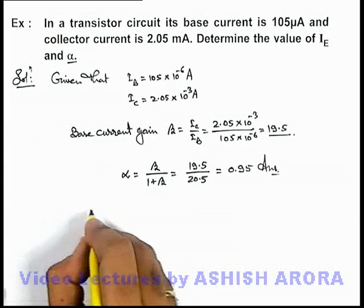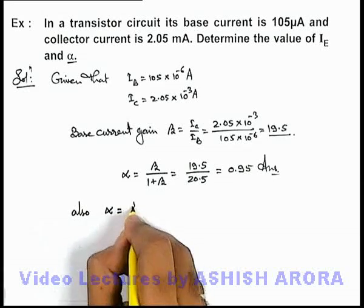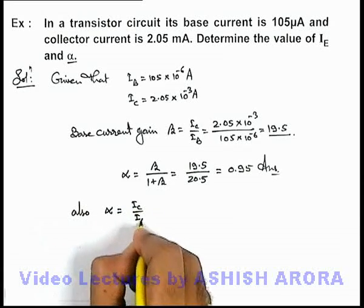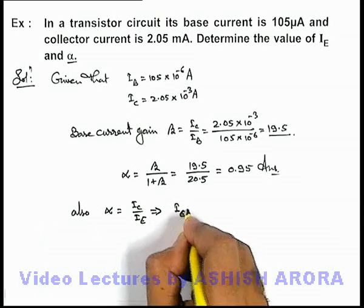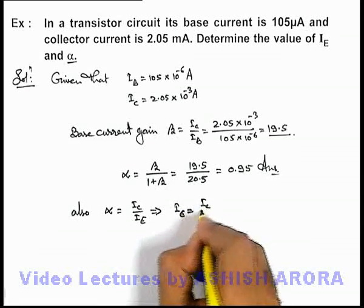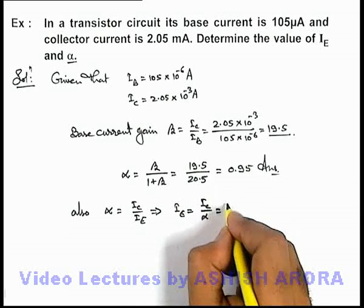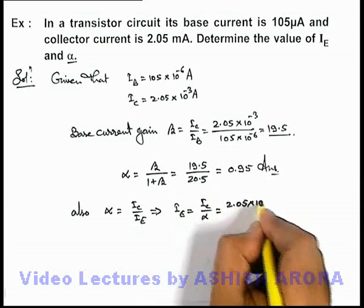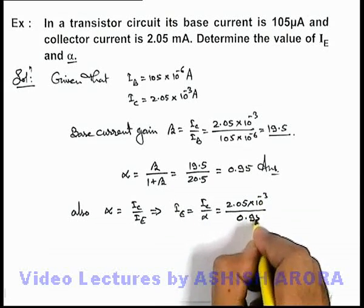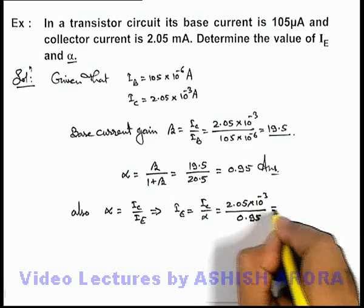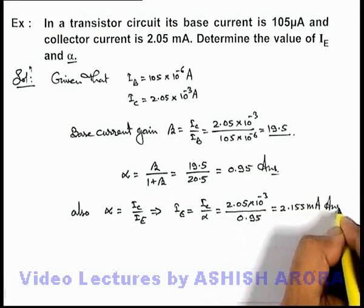We also know that the value of alpha is Ic over Ie. This implies the value of emitter current can be obtained as Ic divided by alpha. Here Ic is already given as two point zero five into ten to the power minus three, divided by zero point nine five. On calculation we get two point one five five milli ampere, which is the other answer to this problem.